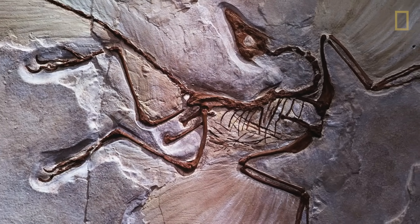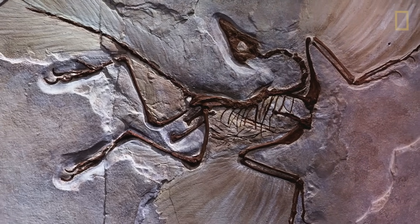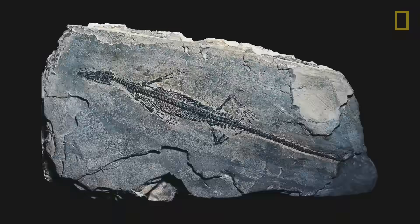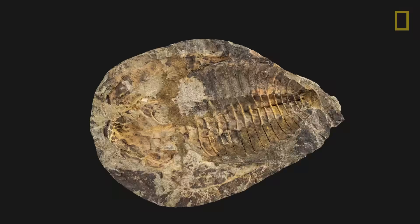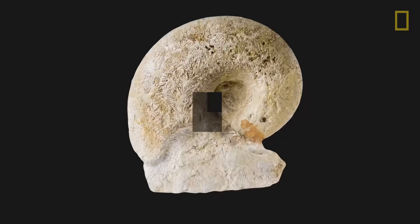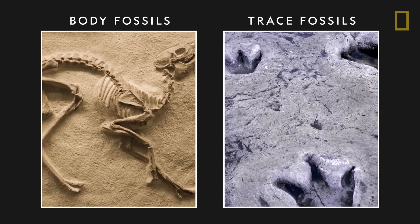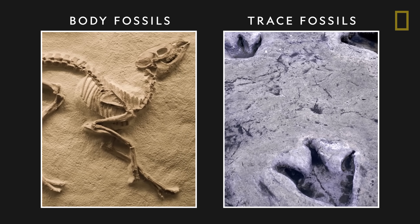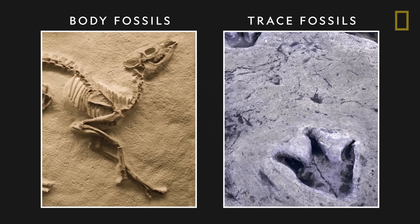Fossils are remnants or impressions of ancient organisms that are naturally preserved in stone. While there are hundreds of fossil types, they are often grouped into two major categories: body fossils, which are the preserved remains of plants and animals, and trace fossils, which are records of an animal's behavior, such as footprints.